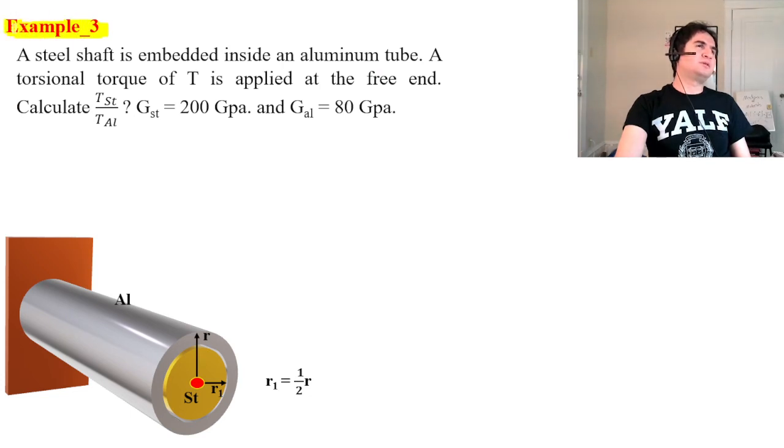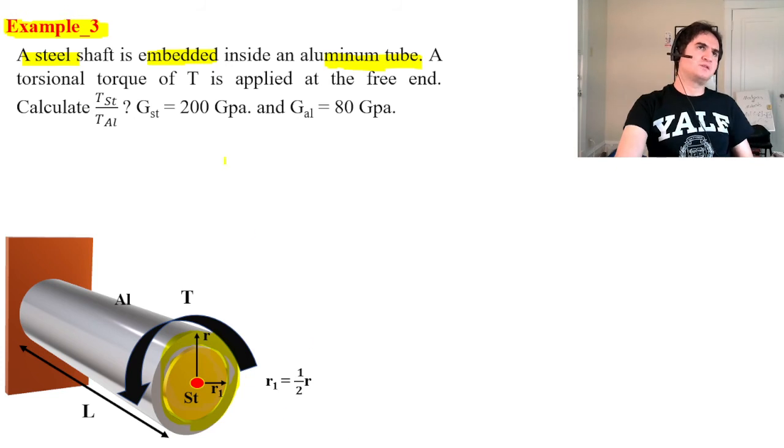Let's review another example. A steel shaft is embedded inside an aluminum tube. So this is the steel part which is embedded in an outer cylinder of aluminum. And a torsional torque is applied to both of them. A torque of T, a torsional torque applied at the free end. Calculate the ratio of torsion of steel over torsion of aluminum.